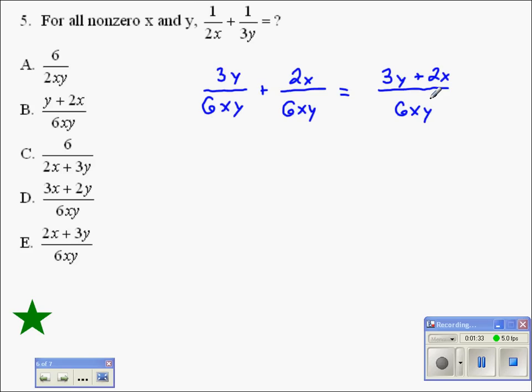This is as far as we can go with this problem. 3y plus 2x divided by 6xy is letter E.